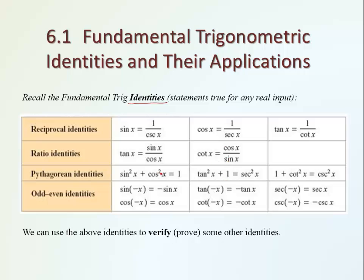The next row shows us Pythagorean identities. They are built on the fact that x² + y² = r² for any circle with the center at the origin. The first one is the most commonly used: sine squared plus cosine squared of the same angle equals 1. The other two are also good to remember: secant squared equals tangent squared plus 1, and cosecant squared equals cotangent squared plus 1.